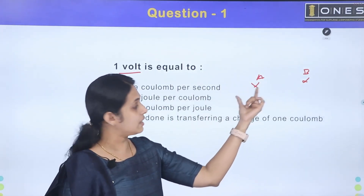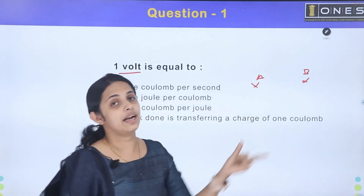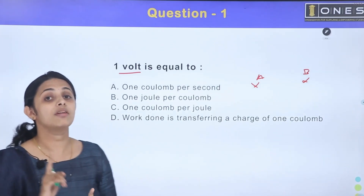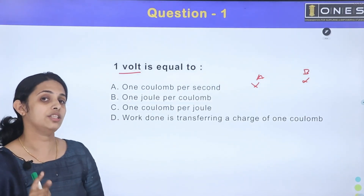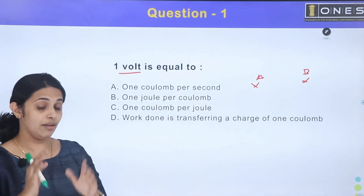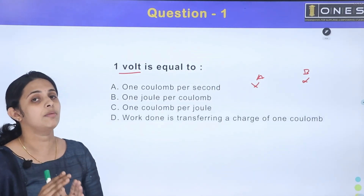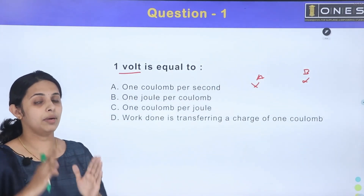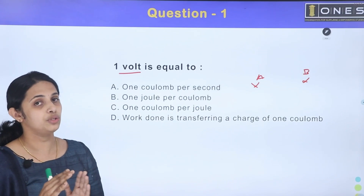If we transfer a unit charge from A to B, we do one joule of work. If we do one joule of work from A to B, we are transferring a unit charge.